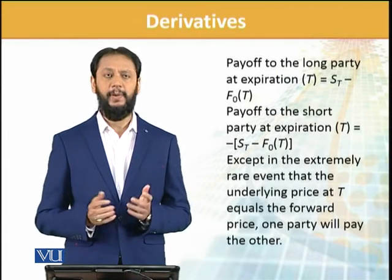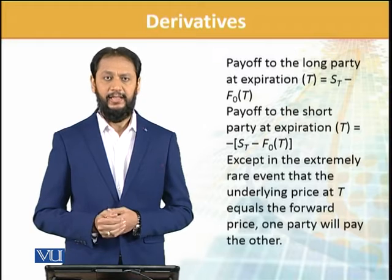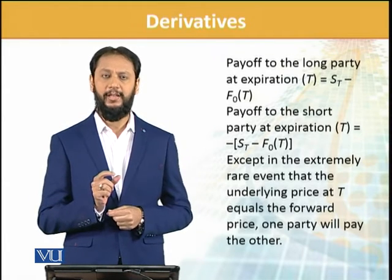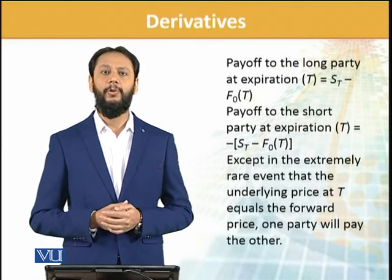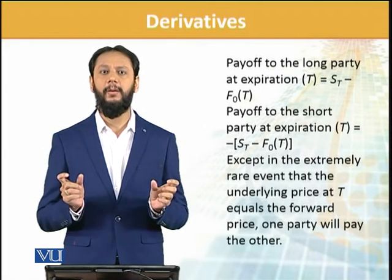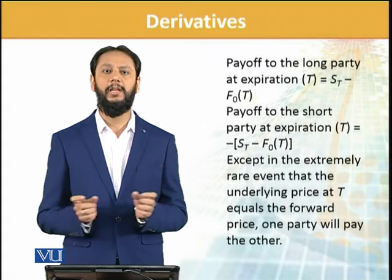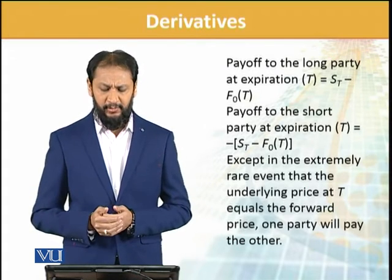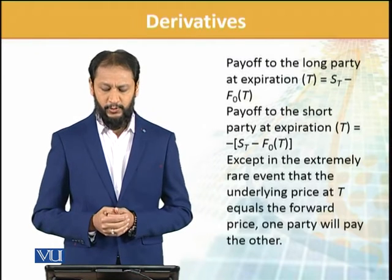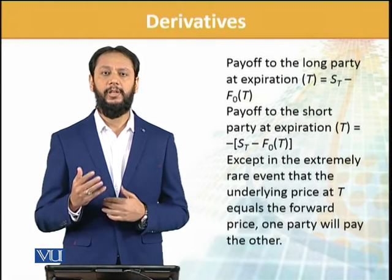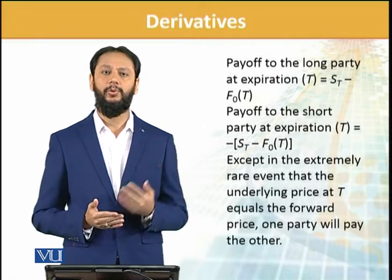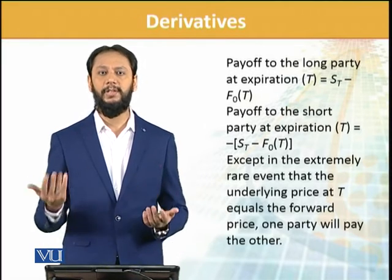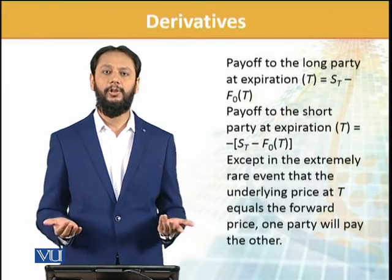Payoff کیسے نکالتے ہیں: expiration پہ Sₜ — یعنی maturity کے time پہ spot price — minus forward price۔ اس سے gain یا loss کا پتا چلے گا۔ Except in an extremely rare event where underlying price equals the forward price, one party will pay another. دو parties کے درمیان contract ہے — ایک party pay کر رہی ہوگی، دوسری receive کر رہی ہوگی۔ کبھی بیچنے والے کو فائدہ ہوگا، کبھی خریدنے والے کو۔